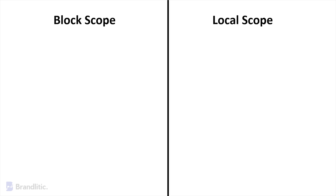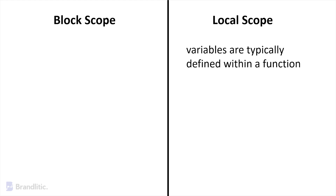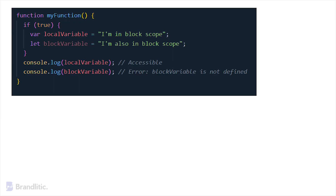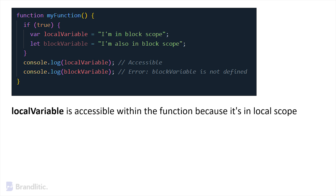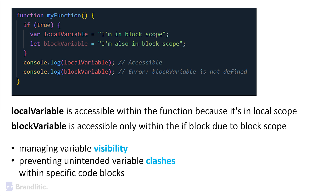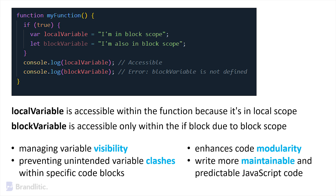Let's understand the difference between block scope and local scope in JavaScript. Block scope is often confused with local scope, but there's a key distinction. In local scope, variables are typically defined within a function, while block scope is created within code blocks like if, for, or while statements. Local scope is function-level, meaning it encompasses the entire function, while block scope is limited to the specific block where the variable is declared. In an example, a local variable is accessible within the function because it's in local scope, whereas a block variable is accessible only within the if block due to block scope. Block scope is a powerful tool for managing variable visibility and preventing unintended variable clashes, enhancing code modularity and maintainability.